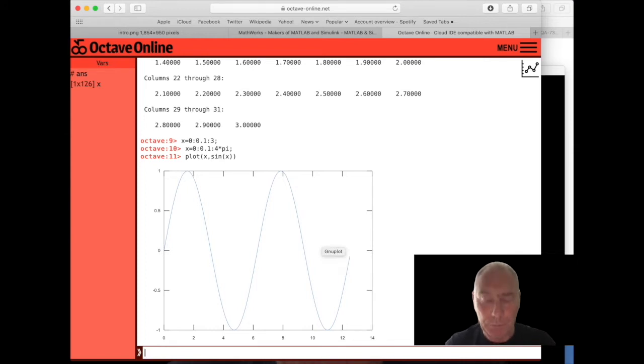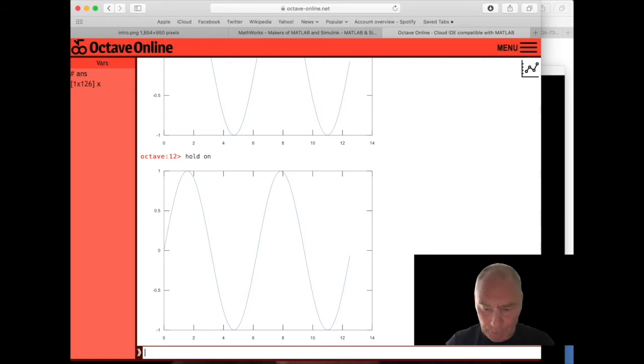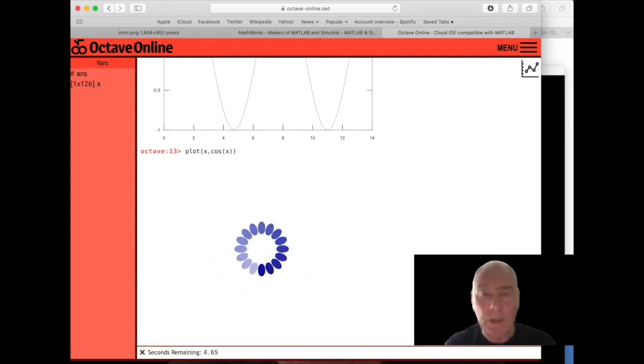We can add to this plot. If we type hold on, that means all new plots will go onto this plot. So we could plot several functions together. So we could also plot x against cos x. Now we've got two graphs.